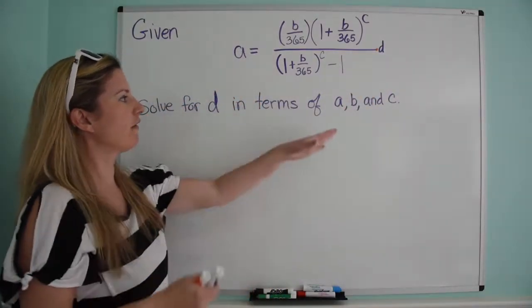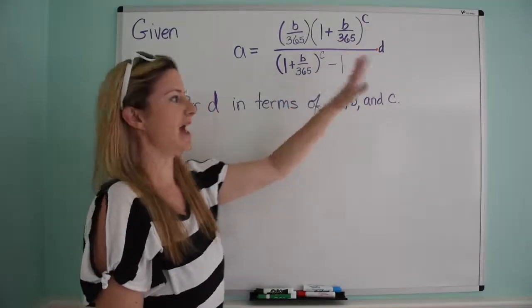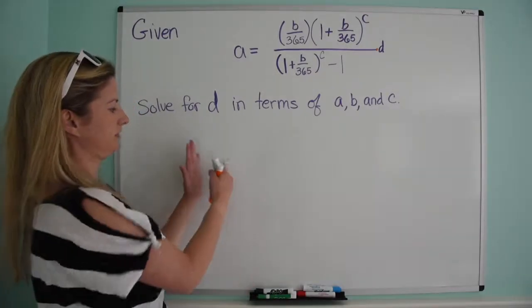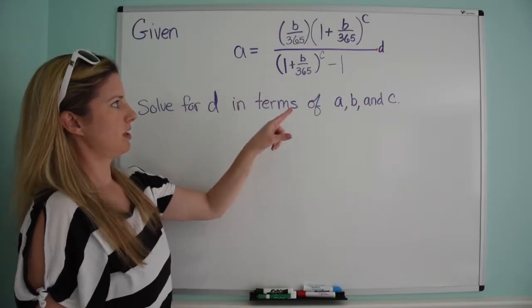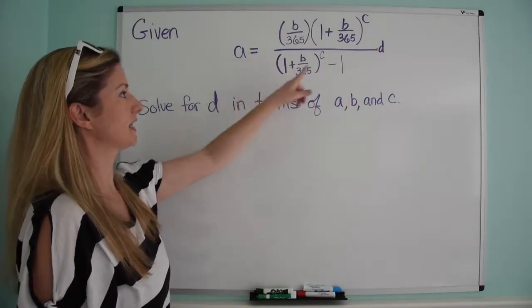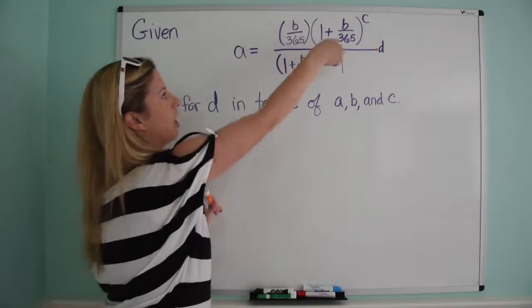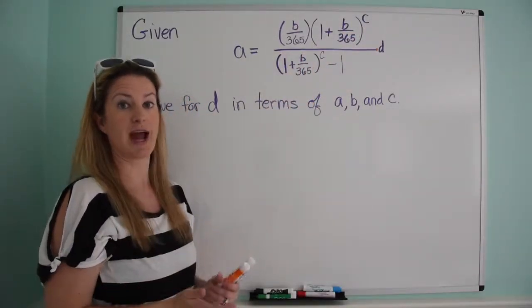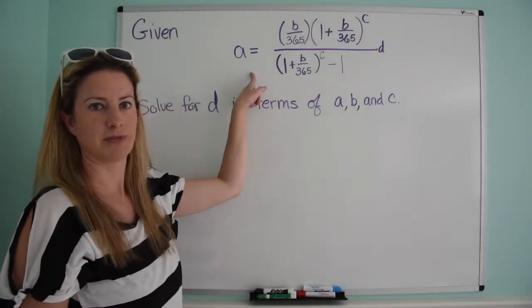Now remember, solving for d in terms of a, b, and c means you want it to be d equals and then a, b, and c are on the other side. So how do we deal with this? Well basically, we have d times a fraction. That's all it is. Don't let all of this distract you. Don't let the fraction within the fraction and the exponents distract you. It's literally d times a fraction.